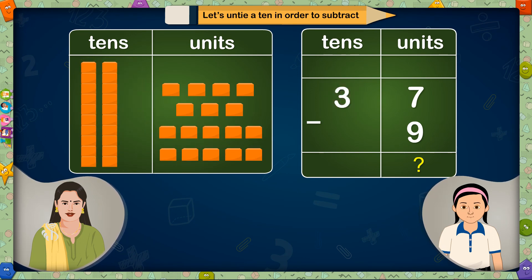If we untie 1 ten, we will get 10 units plus 7 units that is 17 units. And as we have untied 1 ten out of 3 tens, only 2 tens will be left. Now we will reduce 9 units from 17 units. How many units will remain then?